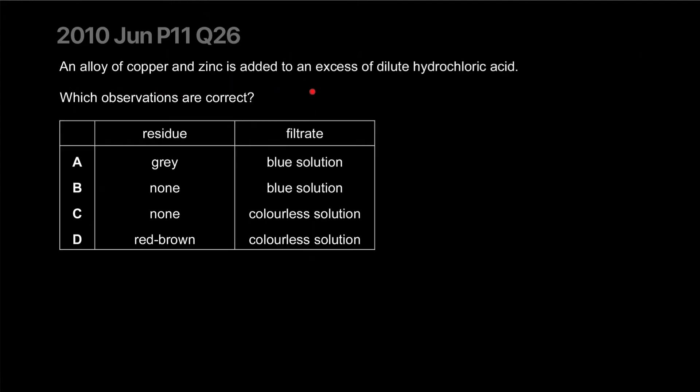An alloy of copper and zinc is added to excess dilute hydrochloric acid. Which observations are correct? Zinc will react whereas copper will not react. The filtrate solution - zinc dissolved in it will be colorless and not blue. And the residue is going to be pinkish because copper is pink in color, the metal looks red brown. Correct answer is D.